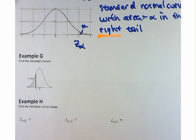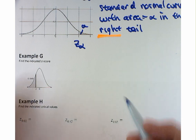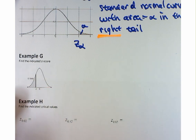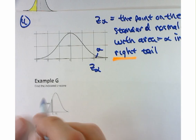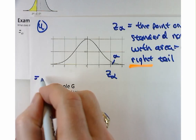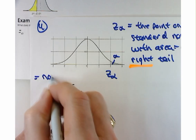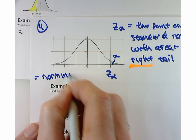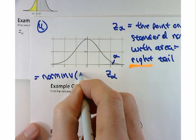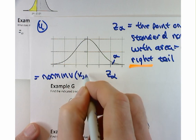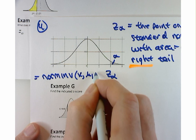To do that, we're going to use a command we haven't used yet: the norm inverse command. These commands will be given to you on the exam — I don't expect you to have them memorized, though you probably will because you'll use them so much. The format of the command is norm inverse, then your value of X, then the mean, then the standard deviation.